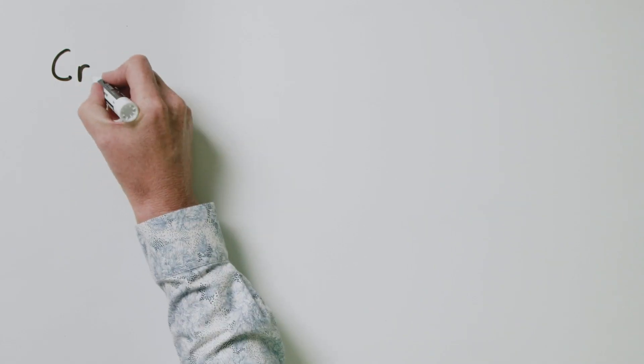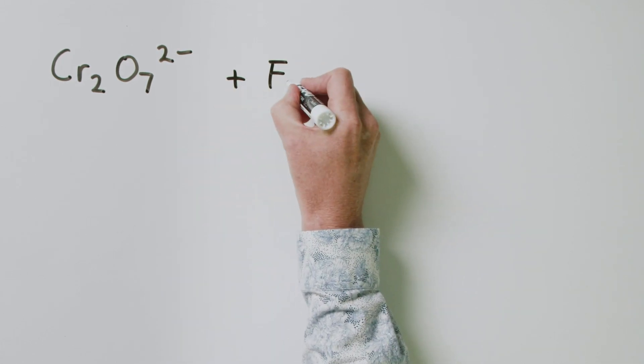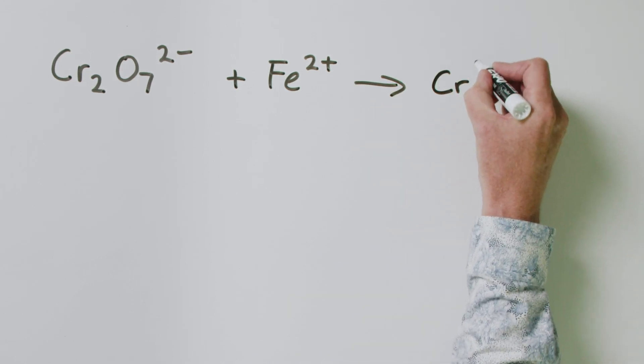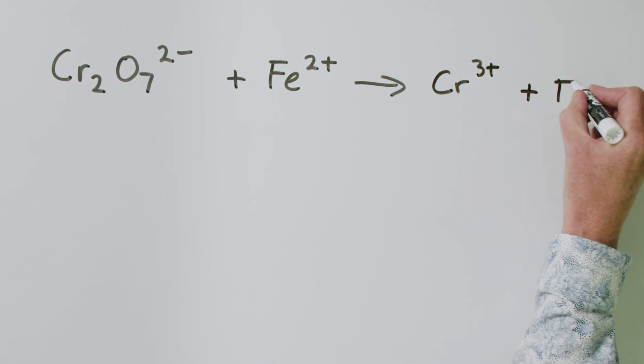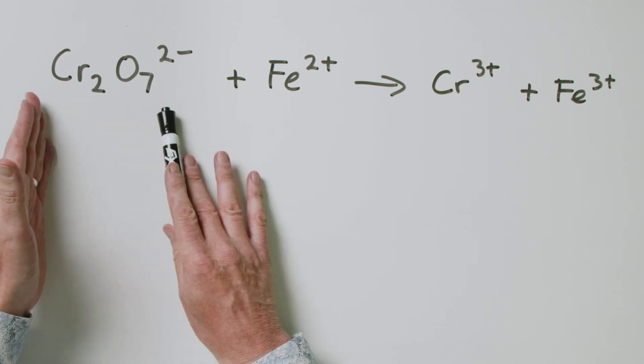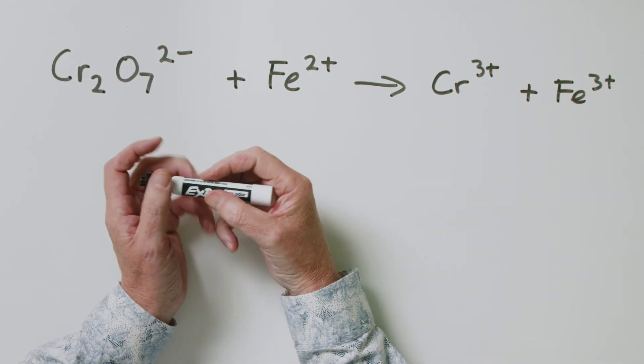Let's get stuck in and do an example. The first example we are going to look at is the reaction of dichromate, which is going to react with Fe2+, and what that is going to form is Cr3+ and Fe3+. That's the bare bones of the reaction that we're going to be balancing. We have both atoms and charges on both sides of the reaction arrow, and we need to make sure that both of those are balanced.